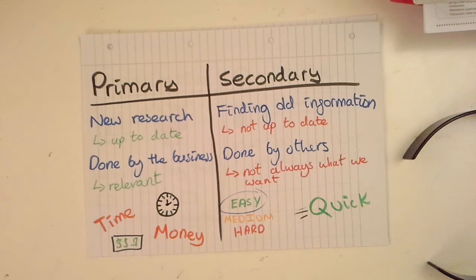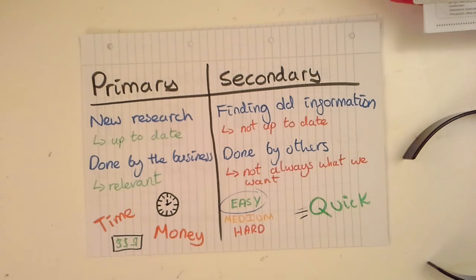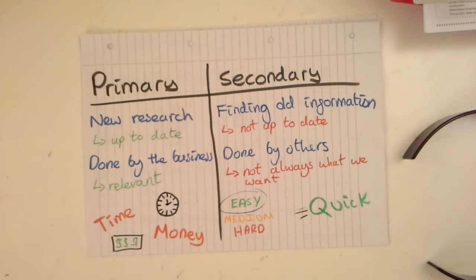Because of this, secondary research is often quick, easy and cheap to obtain. But because it's done by others, it may not be relevant to us. For example, a supermarket like ASDA finding out about house prices isn't going to be very relevant to their market. It makes much more sense for ASDA to do its own market research to find out relevant information if it can't find anything already available to it.